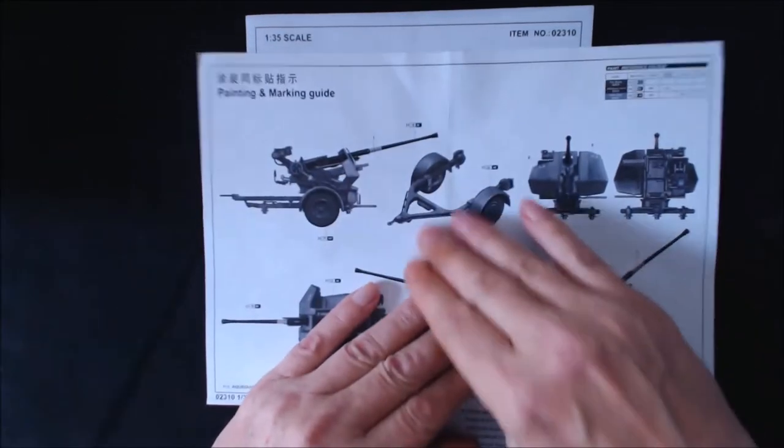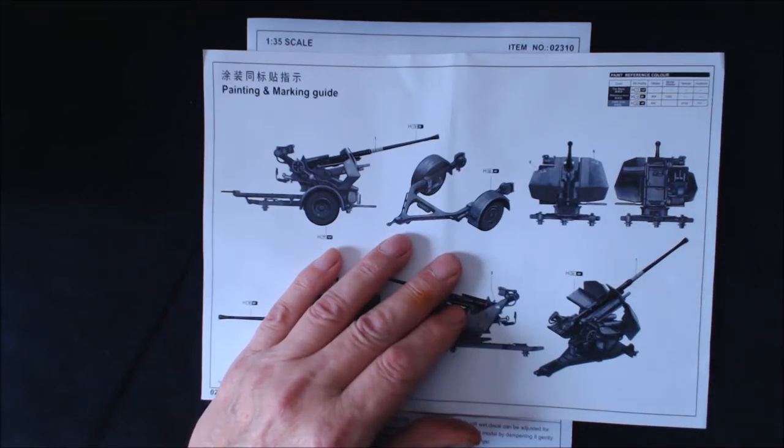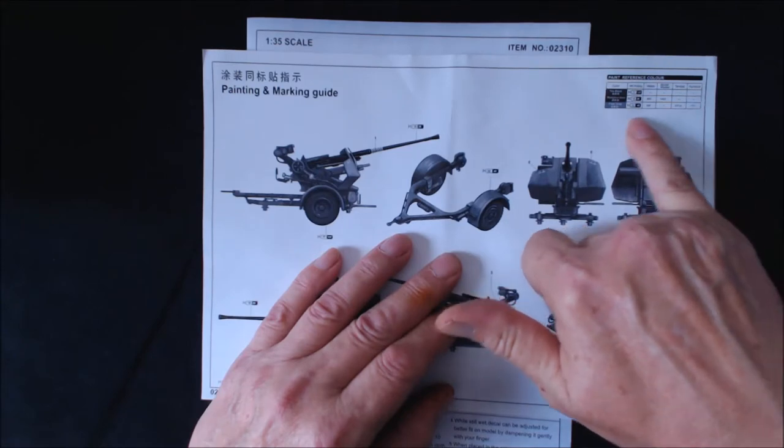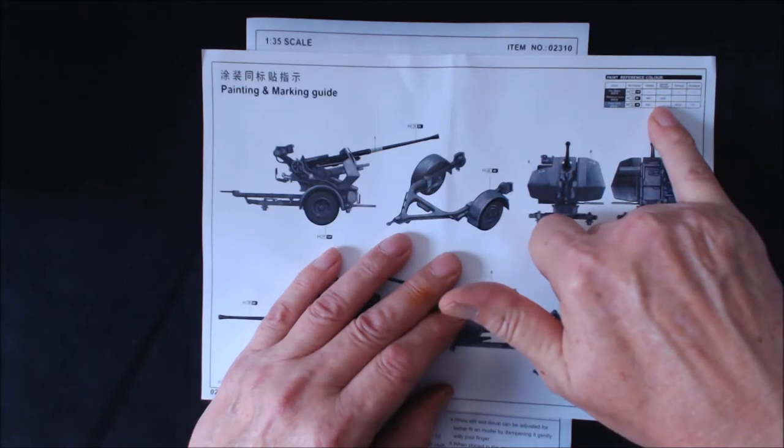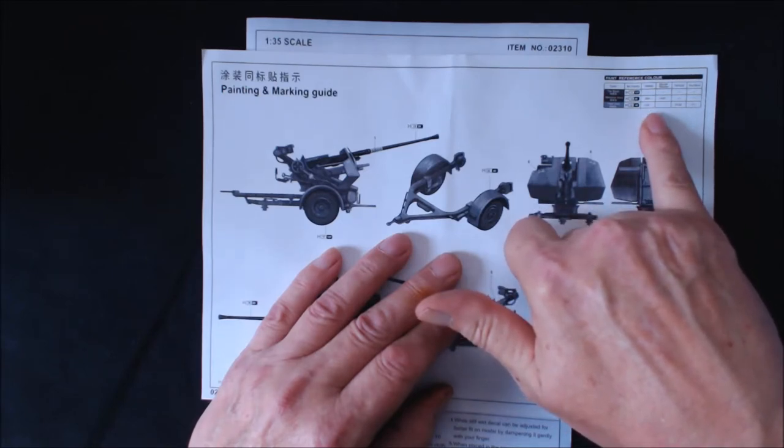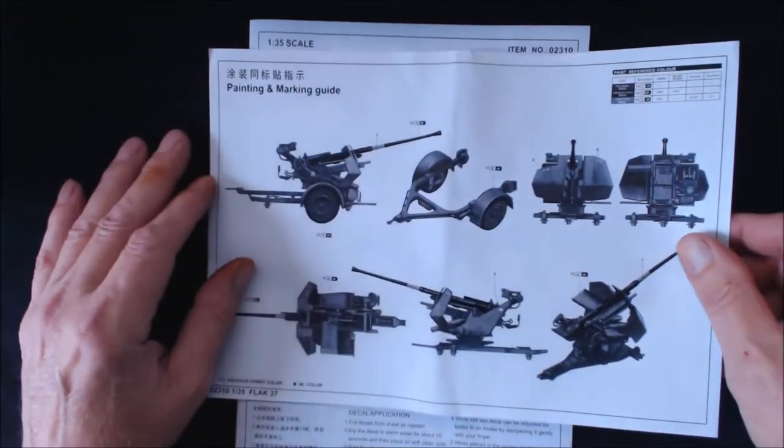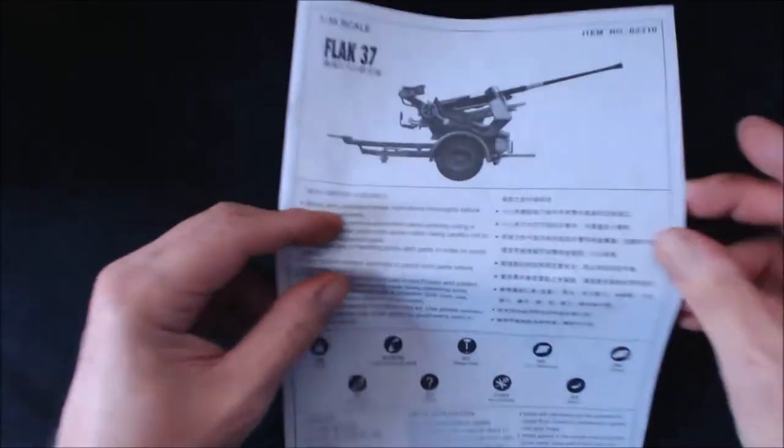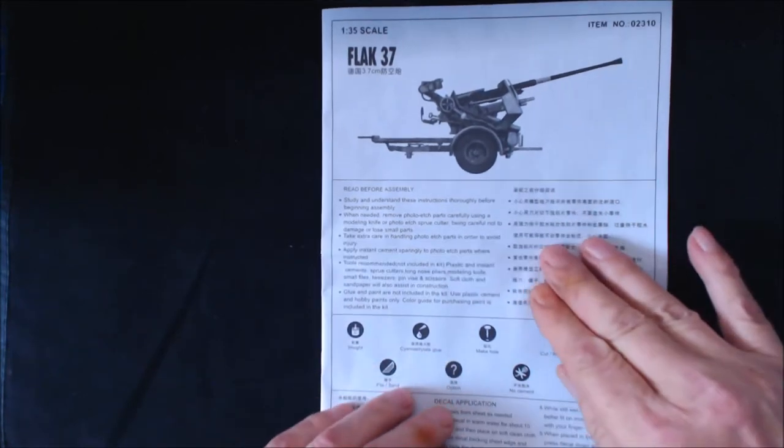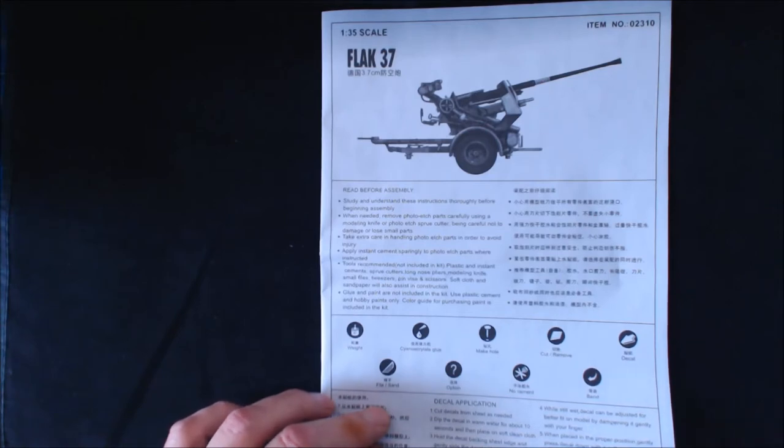The workshop manual, but first we'll have a quick look at the painting and marking guide. Colour call-outs: Mr. Hobby, Vallejo, Model Master, Tamiya, and Humbrol. The Humbrol we've only got one, and that's the field grey. The Tamiya we've only got the one, the XF-22 which is the field grey. Model Master we've only got the one, and that's the black. Vallejo we've got the black and the field grey. And Mr. Hobby has got the whole lot including the tyre black.